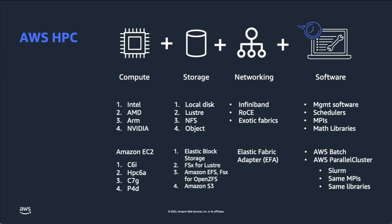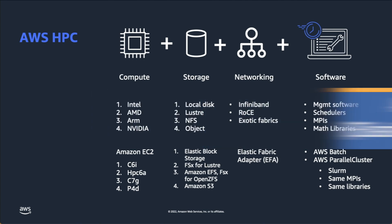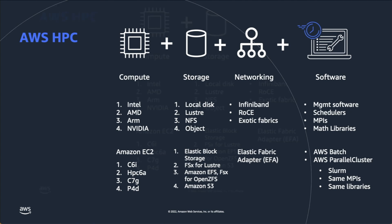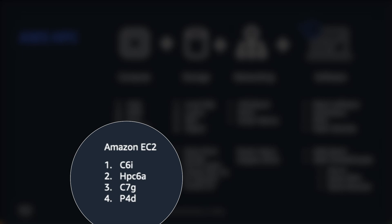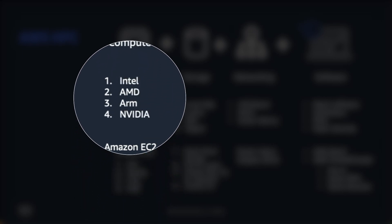We can map all of these things onto the same kinds of concepts in AWS. Under the compute banner, we'll generically refer to compute as a thing called Amazon EC2 — our Elastic Compute Cloud. The instance types you see on screen, like the C6i and HPC6a, actually map to the CPU architectures in the top row: Intel, AMD, ARM, and so forth.